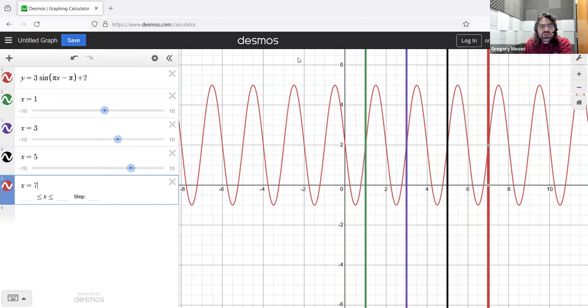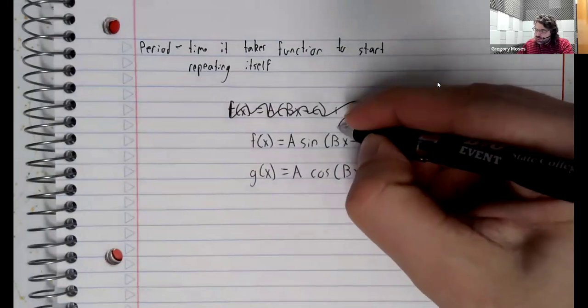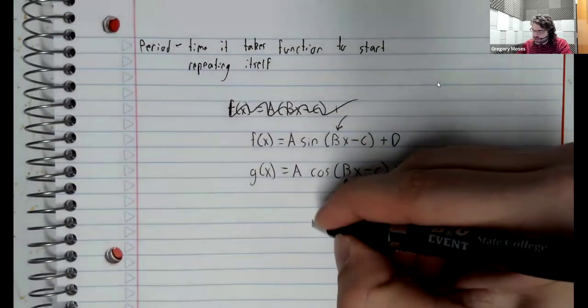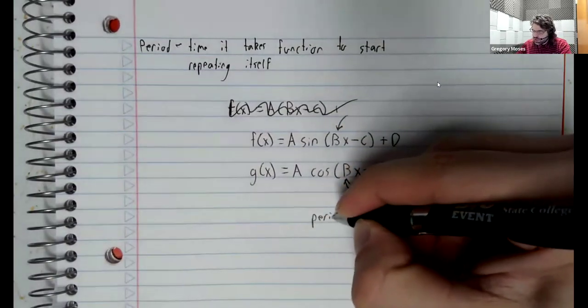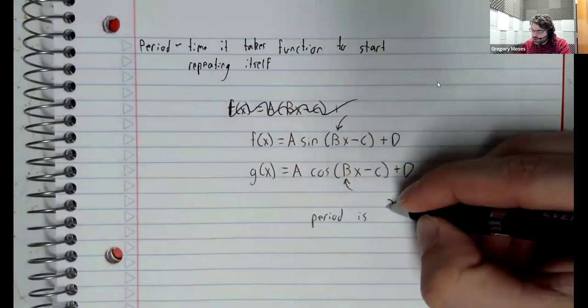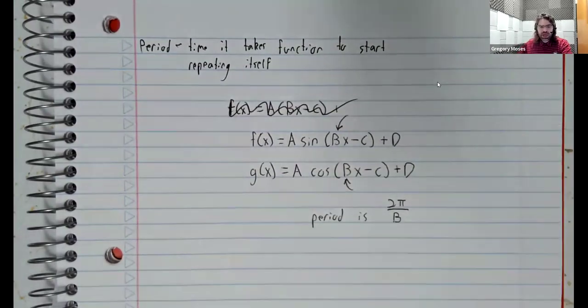So what's the period of a sinusoidal function? Well, the period is controlled by the constant in front of the x. The period is 2 pi divided by b.